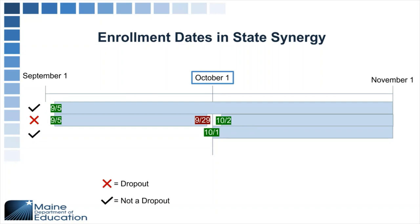The enrollment is based on October 1 enrollments, and this year that is a Sunday. So you'll want to make sure that if a student is starting on Monday, 10-2, they are enrolled on 10-1 so they're not on anyone's dropout report. The first example shows an enrollment that overlaps October 1 — that's all set. The second shows a gap where the student transferred over the weekend and was not enrolled until 10-2, so that student will look like a dropout. The last example shows that a 10-1 enrollment will not count as a dropout.